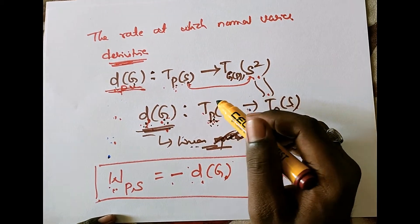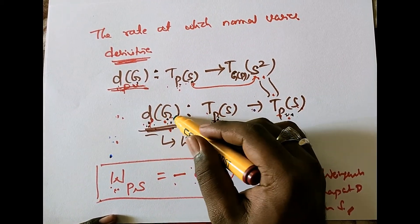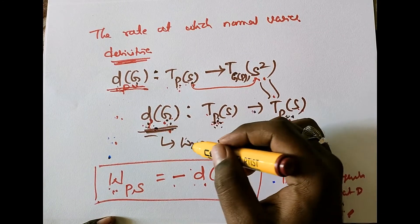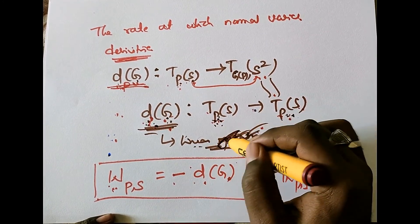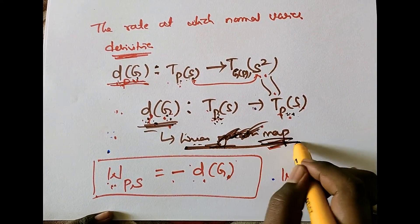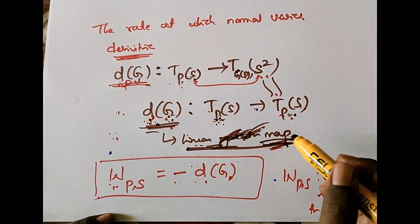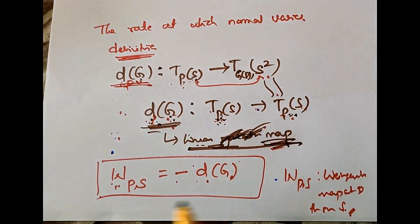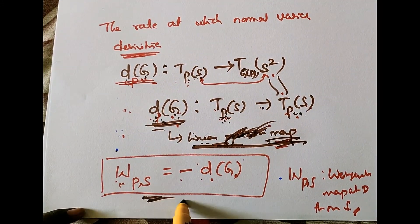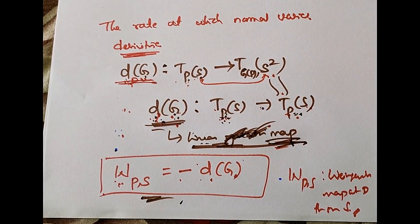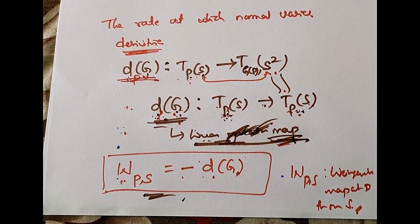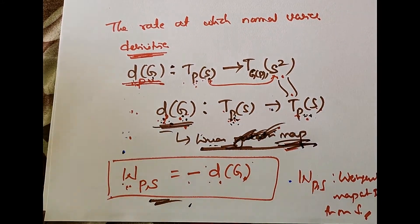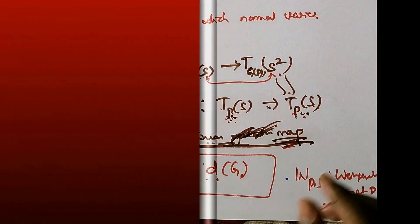One small correction: the derivative of the Gauss map at point p is not just a linear operator, but more specifically a linear map. That is how we define the Gauss map and the Weingarten map, and these two maps will be further used to define the Gaussian curvature and the mean curvature.